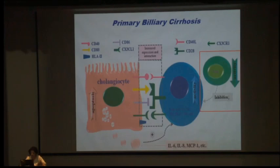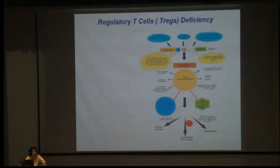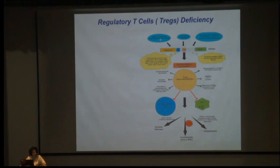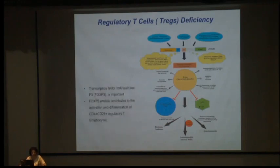FOXP3 has an N-terminal repressor domain, zinc finger, leucine zipper, and FKH domain. FOXP3 expression is regulated by epigenetic modification, transcriptional regulation, and post-transcriptional methylation. FOXP3 inhibits CD40 effector cells and APCs; loss of FOXP3 leads to autoimmunity. Therefore, the transcription factor FOXP3 is an important protein contributing to the activation and differentiation of CD4+CD25+ regulatory T lymphocytes.